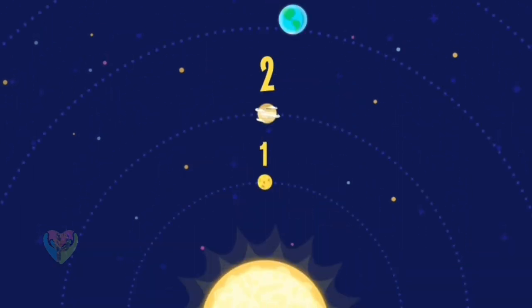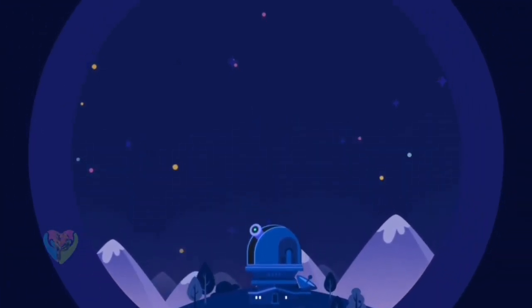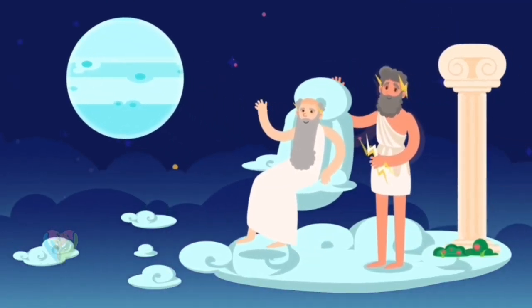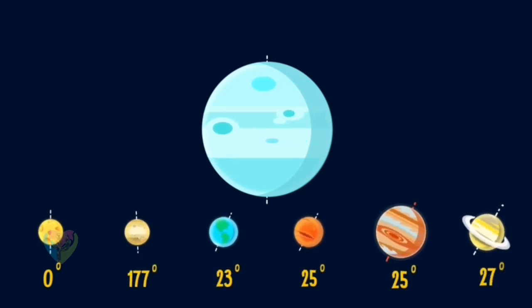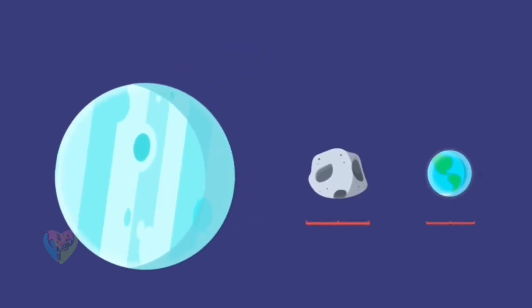For a long time, people thought there were only six planets, because they are easy to see in the night sky. Uranus, the seventh planet from the sun, was discovered much later with the telescope, and named after the Greek god of the sky, Zeus's grandfather. Unlike other planets, Uranus rotates on its side. Presumably, it got this tilt from a collision with a large body, the size of Earth.